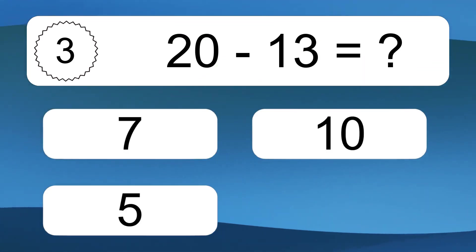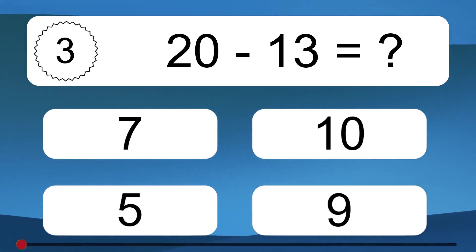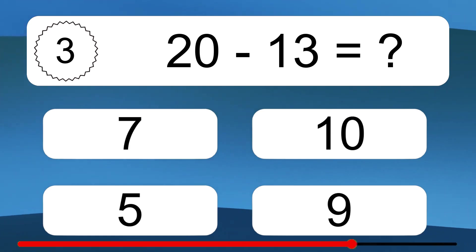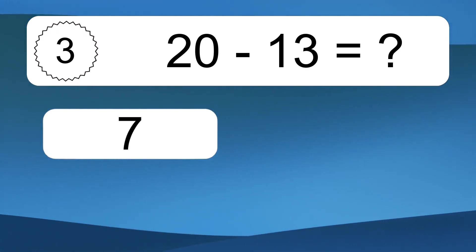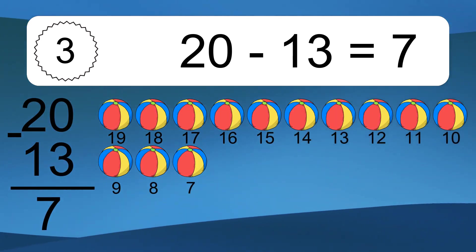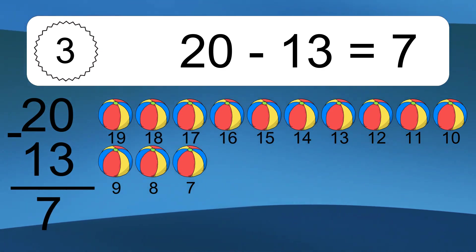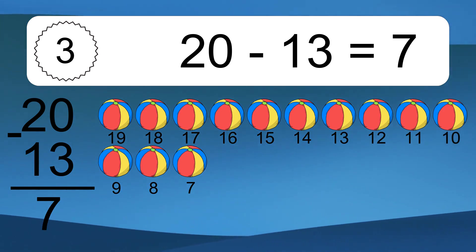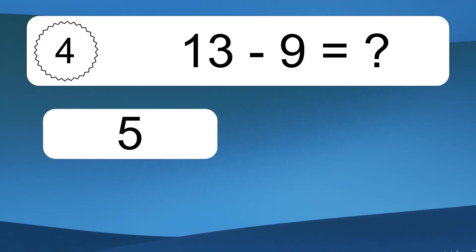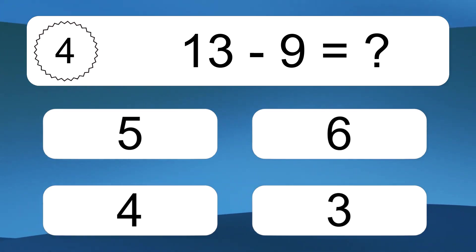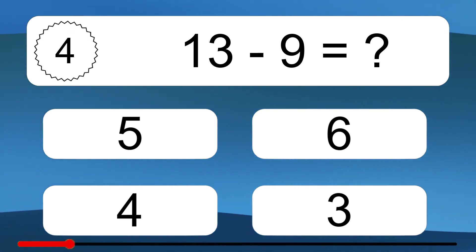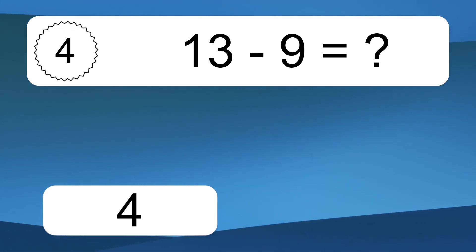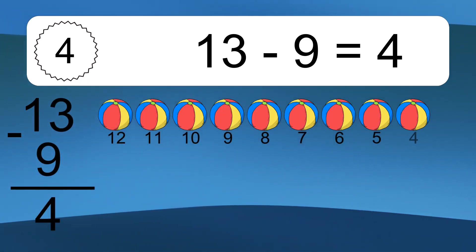20 minus 13 equals what? 20 minus 13 equals 7. Let's count it: 19, 18, 17, 16, 15, 14, 13, 12, 11, 10, 9, 8, 7.